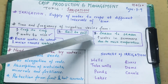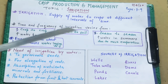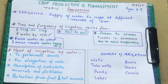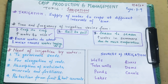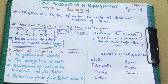तीसरा factor होता है season to season. जैसे कि summers में ज़्यादा पानी देना पड़ता है plants को, क्योंकि उस time पे evaporation ज़्यादा होता है। Evaporation मतलब soil के surface से या soil के ऊपर जो भी leaves पड़ी हुई हैं, उनसे पानी ज़्यादा जल्दी निकलता है क्योंकि गर्मी ज़्यादा होती है, तो ज़्यादा water loss होता है — इसलिए summers में बार-बार, ज़्यादा पानी देना पड़ता है।